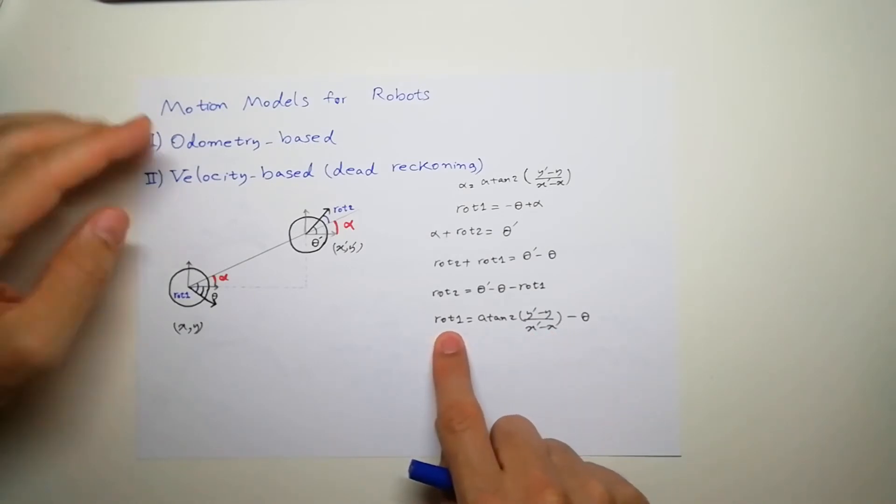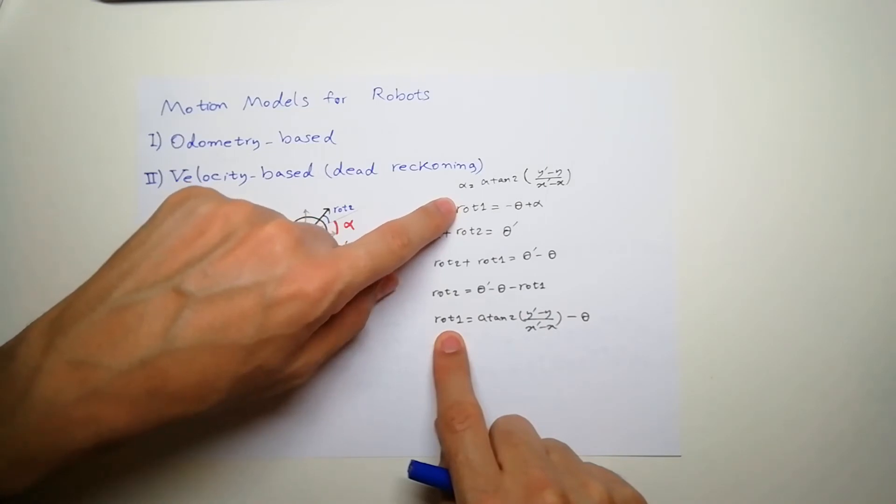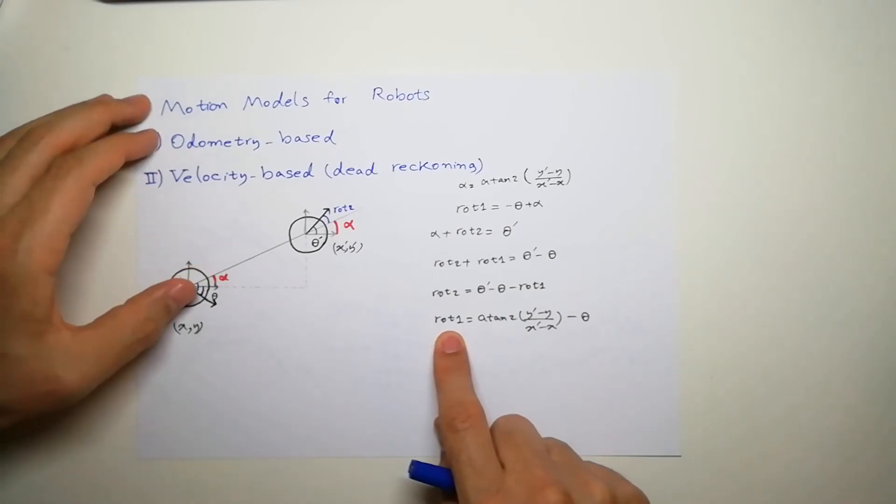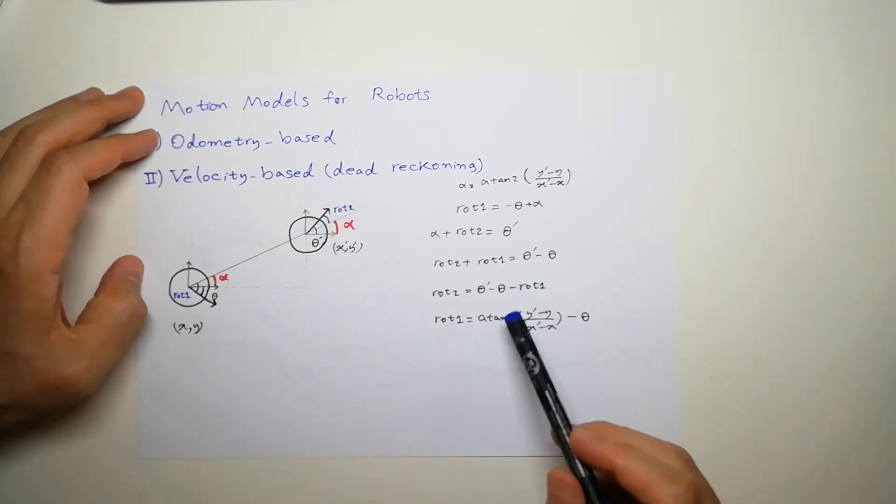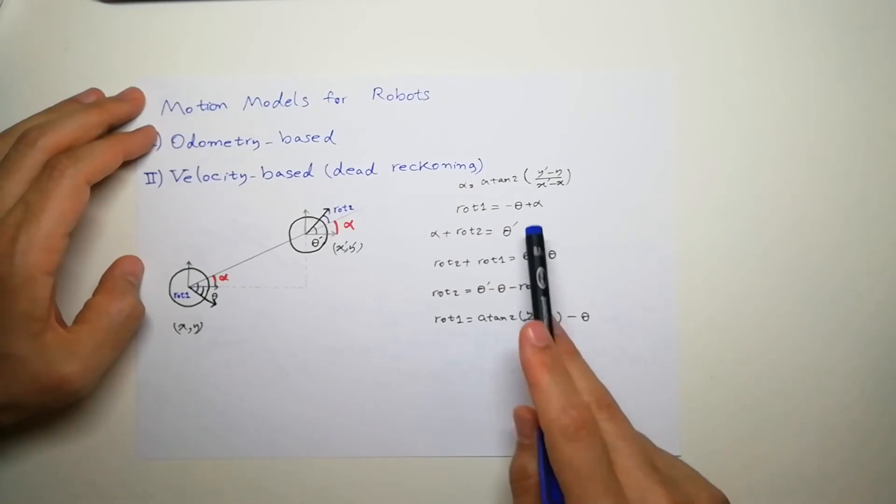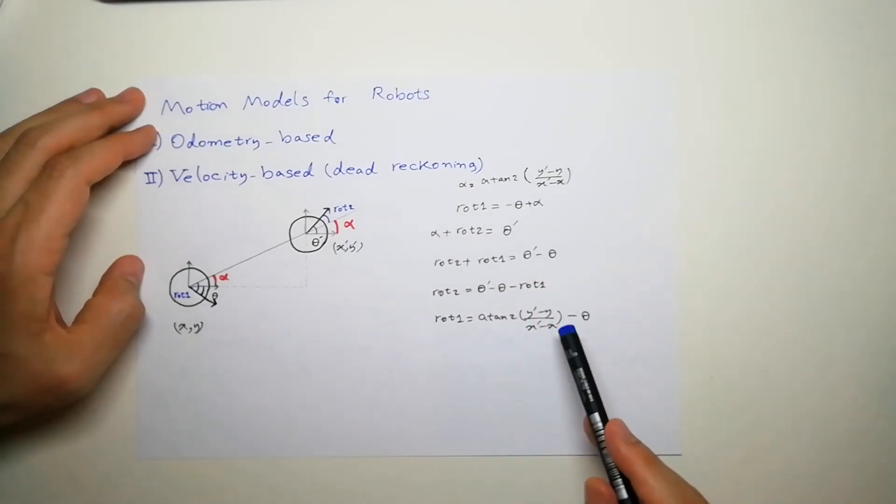Rotation 1 is minus theta. Actually, the robot is heading at theta, but because it's in the lower quadrant, it's minus theta. So, rotation 1 is alpha minus theta, and alpha was arctan of delta y over delta x.